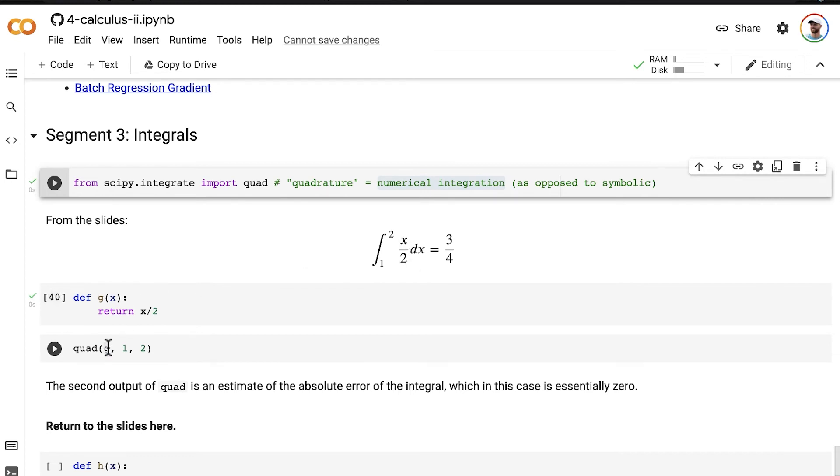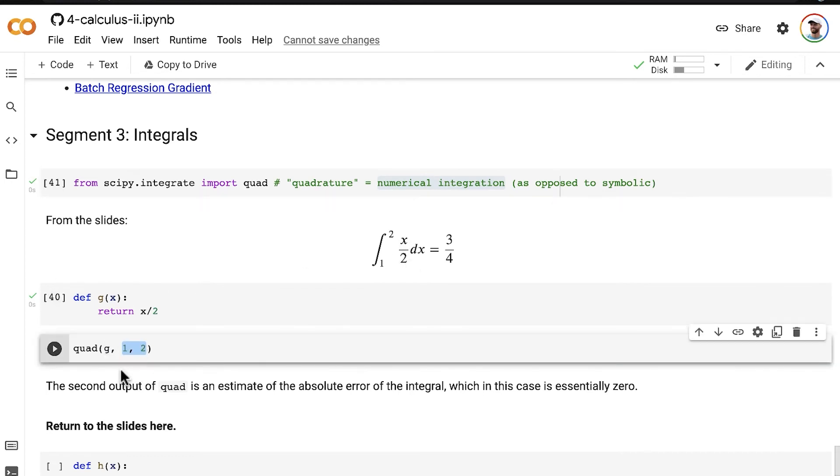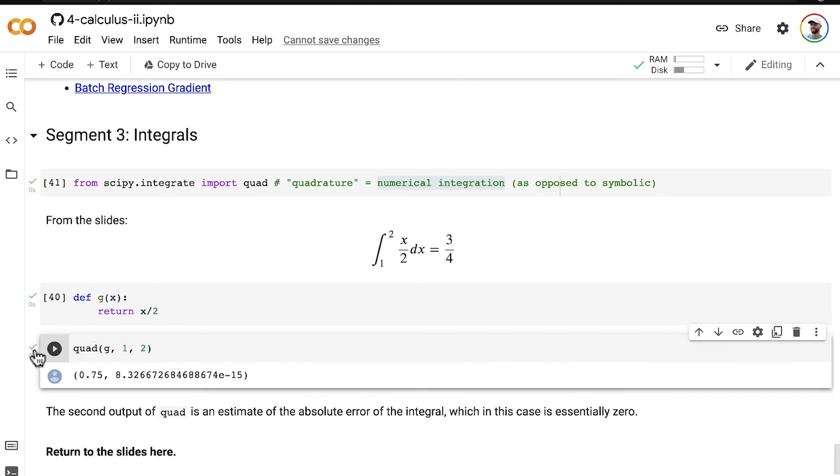the function that we'd like to integrate. And then the remaining arguments are the x values that we would like to integrate over, in this case 1 and 2. So 1 and 2. And then press play, and that's it.